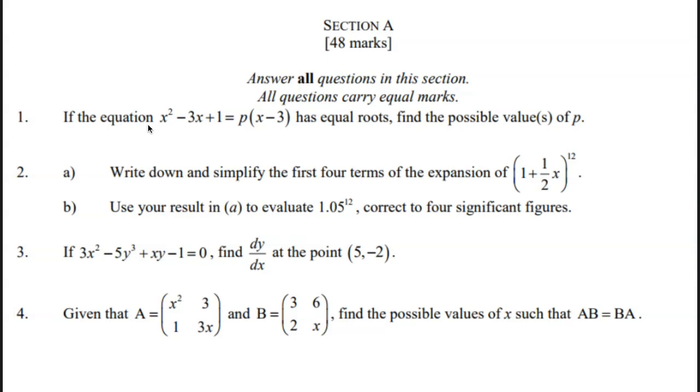Number 3: If 3x squared minus 5y cubed plus xy minus 1 equals 0, find dy/dx at the point (5, -2).